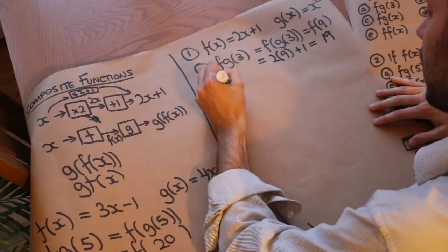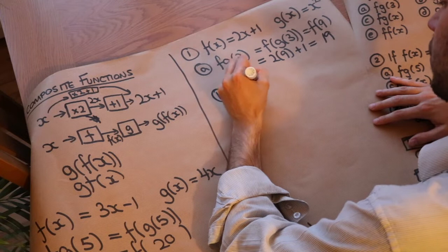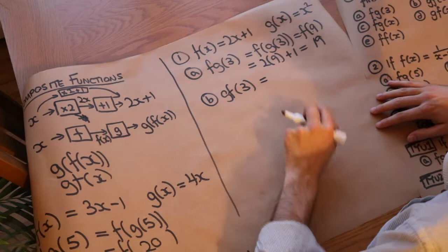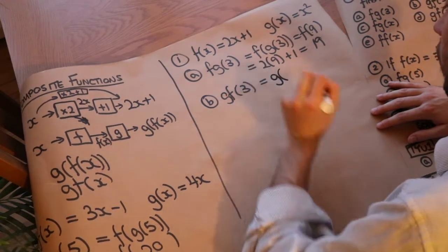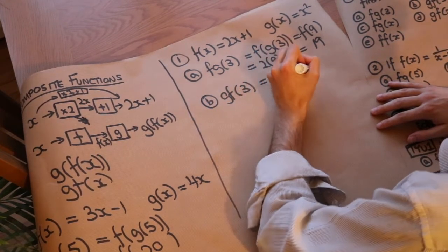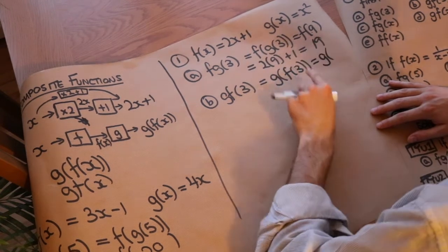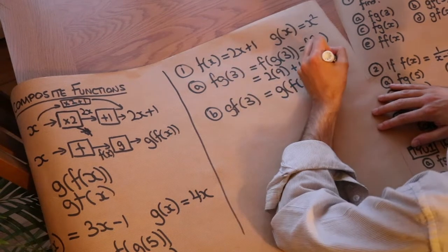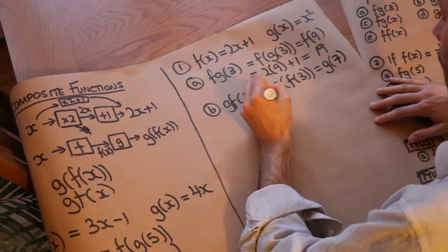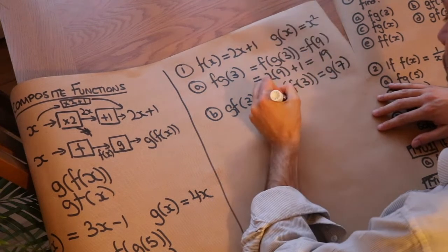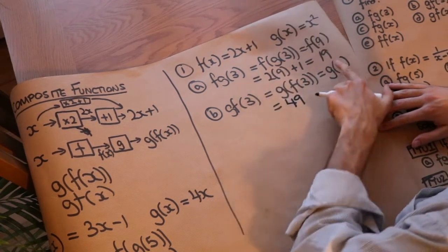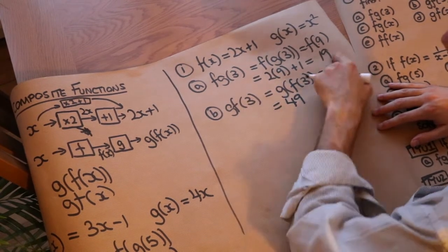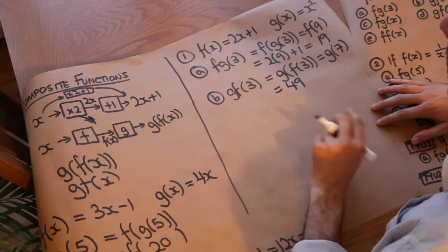Now let's do g(f(3)) — will this give the same value? We've just switched the order of the two functions. f(3) = 2 times 3 plus 1 = 7. Then g(7) = 7² = 49. f(g(3)) was 19 but g(f(3)) was 49, so the order of the functions does matter.